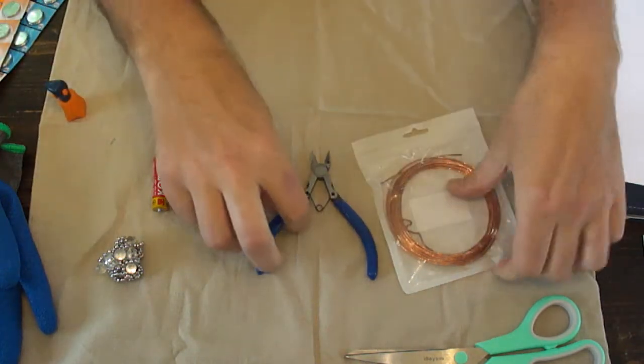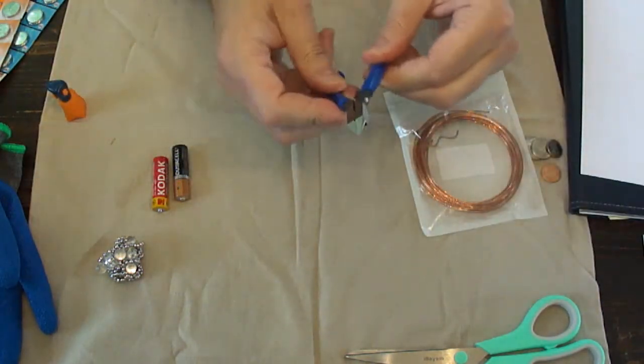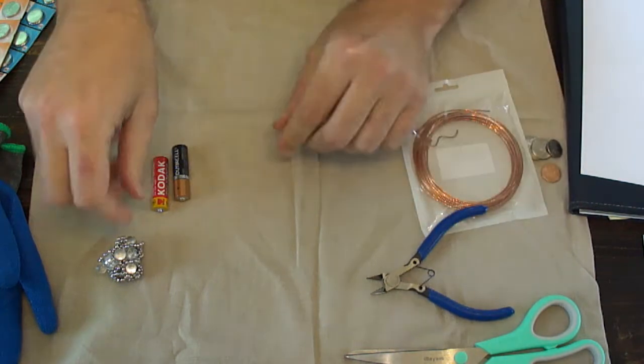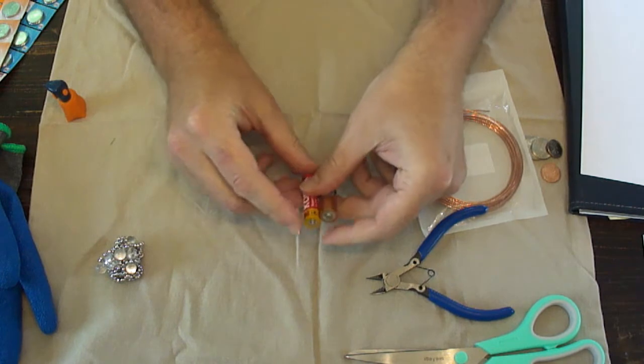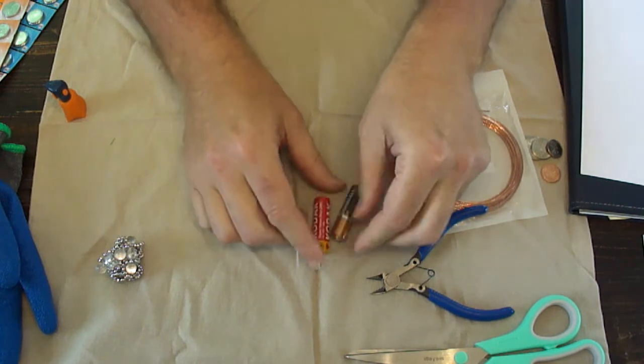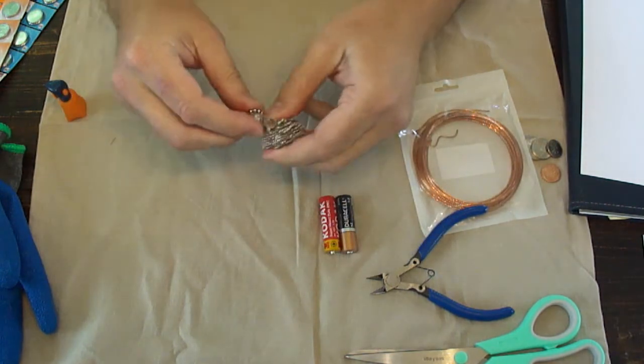So here I have my wire, my wire cutters, batteries. You do need to make sure these have a charge. We sent you probably new ones, but if something doesn't work, that's one of the first things to check.